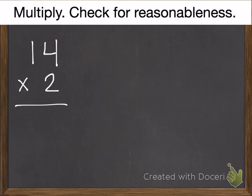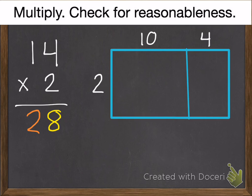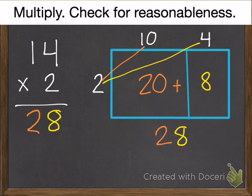Second practice problem. 14 times 2. Go ahead and pause. Okay. 2 times 4 is 8. 2 times 1 ten is 2 tens. So 28. We'll check it. 2 times 4 is 8. 2 times 10 is 20. 20 plus 8 is 28.